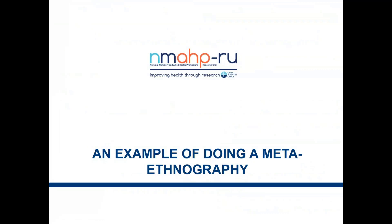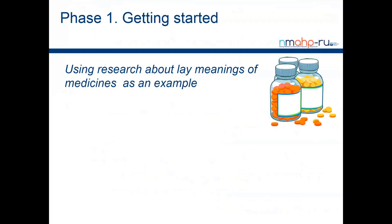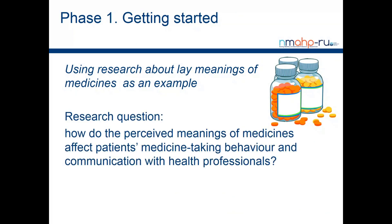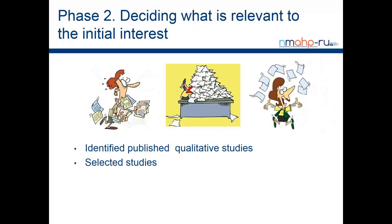A classic example uses research about lay meanings of medicines — meanings held by patients and people who aren't experts or professionals. The research question for this meta-ethnography was: how do the perceived meanings of medicines affect patients' medicine-taking behavior and communication with healthcare professionals? Starting off deciding what's relevant, you do your searches, select the qualitative studies you think are relevant, and can purposely sample. Unlike quantitative reviews, with meta-ethnography you can't include everything, so it is possible to select studies.